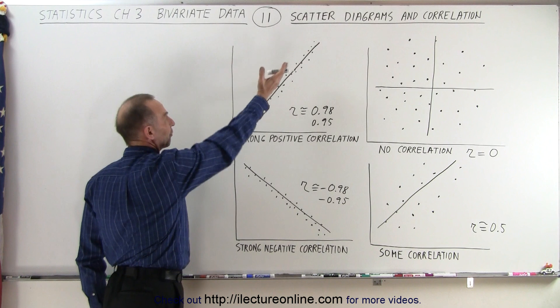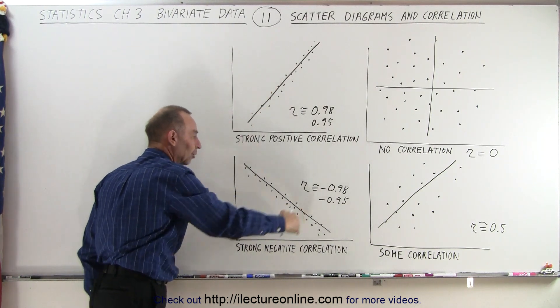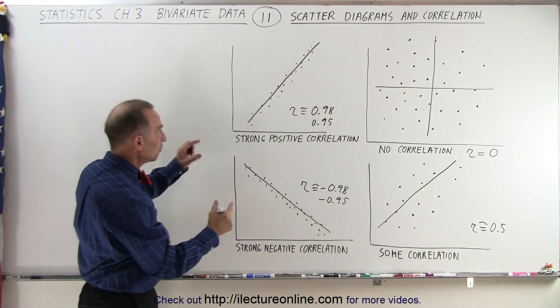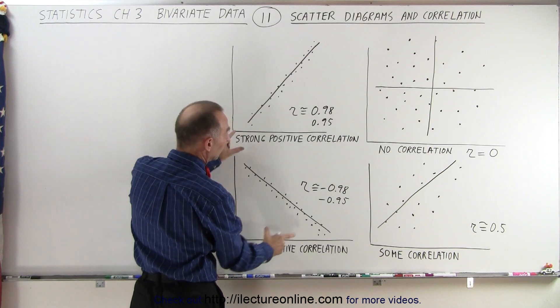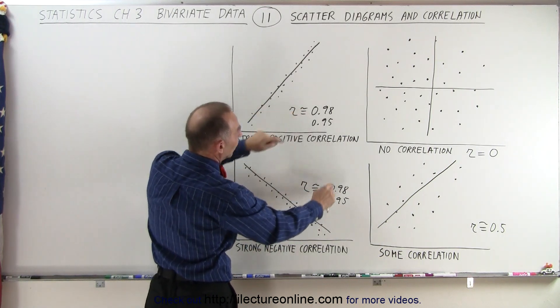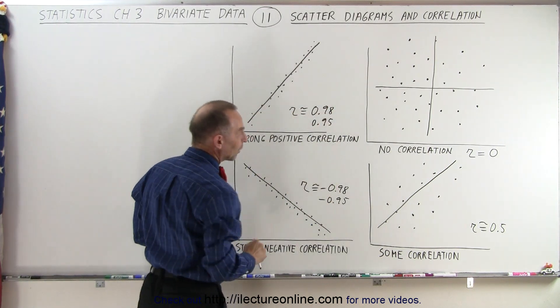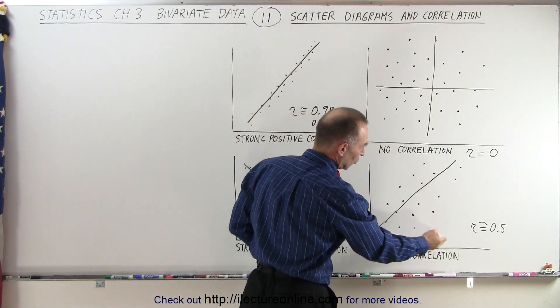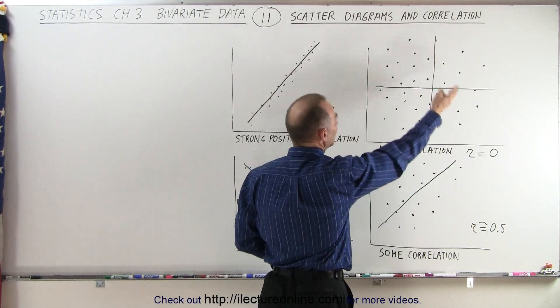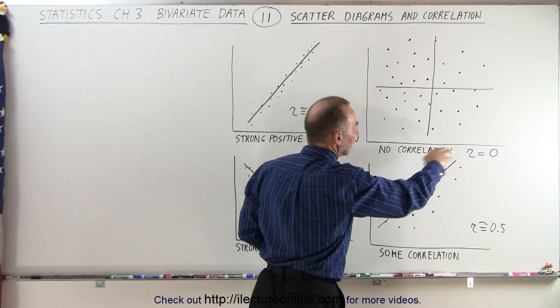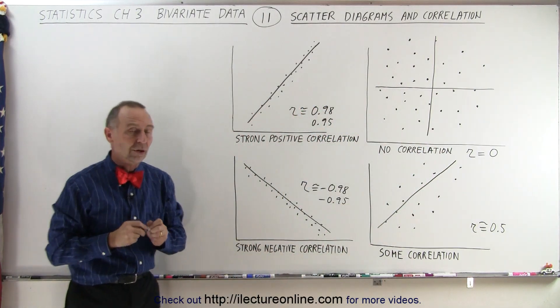So here we can see that the correlation coefficient is positive, here we can see that the correlation coefficient is negative. In both cases there's strong correlations, so therefore the number is close to 1, a positive 1 versus a negative 1. Here the correlation is not as strong, maybe about 0.5, and here you can see no correlation at all, and therefore the correlation coefficient is equal to 0.